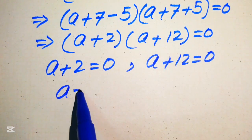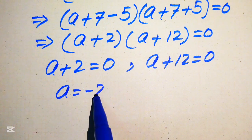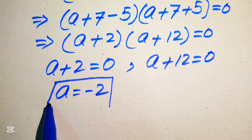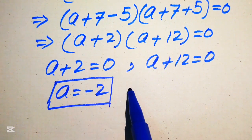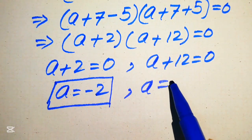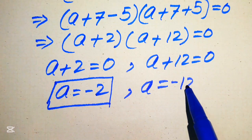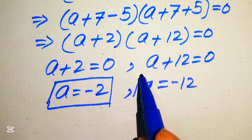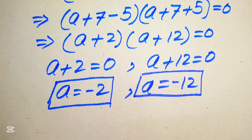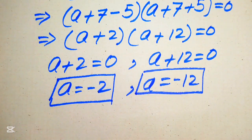From these cases, we get a = −2 and a = −12. This confirms our final answer. I hope you liked both methods — please subscribe to my channel for more exciting videos.